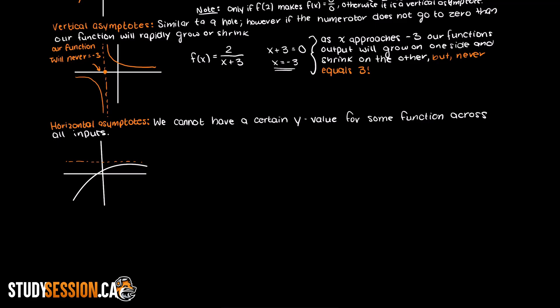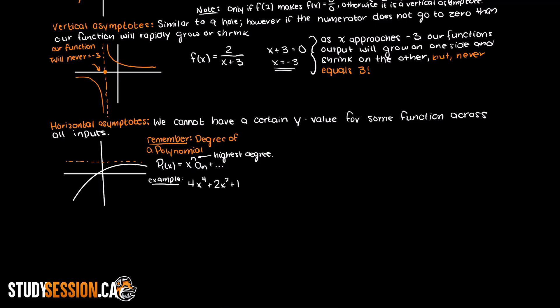Graphically this looks like this. Remember back to when we were first learning about polynomials — we talked about the degree of a polynomial, which is the highest power on the x terms. In this first polynomial the degree is 4 because the highest power on our input term is 4. For this second example the highest degree is 0 since it is simply a constant. So to find the horizontal asymptote there are three scenarios we must consider.